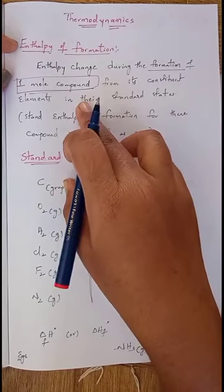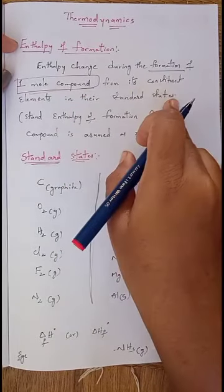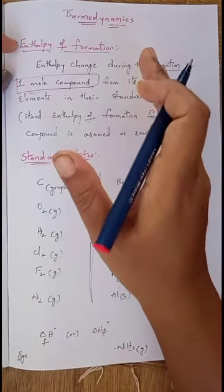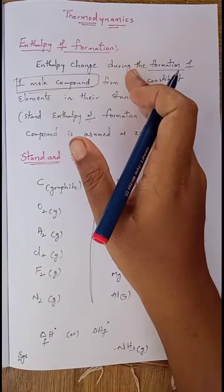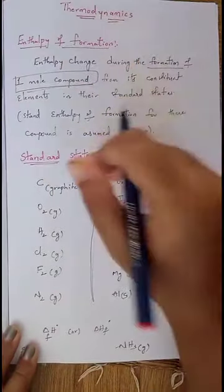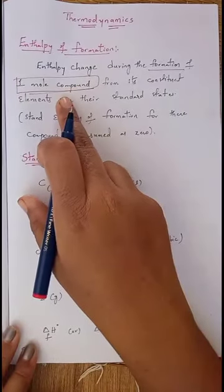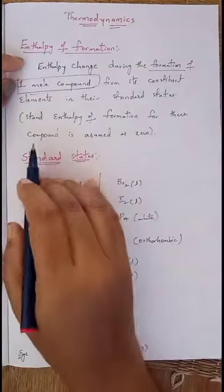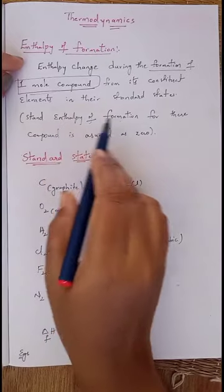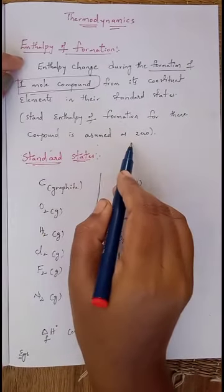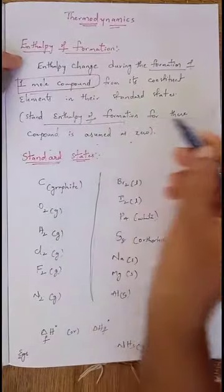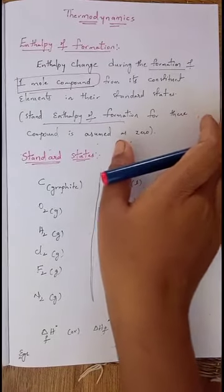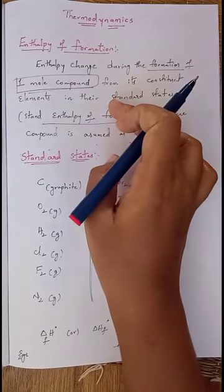This one mole of compound is formed from its constituent elements in their standard states. Each and every element in nature can exist in a particular standard state. By those standard states, we can easily determine what enthalpy change occurs for the formation of that one mole of compound. Standard enthalpy of formation for each element in its standard state is assumed to be zero.